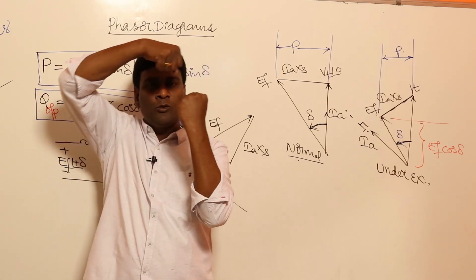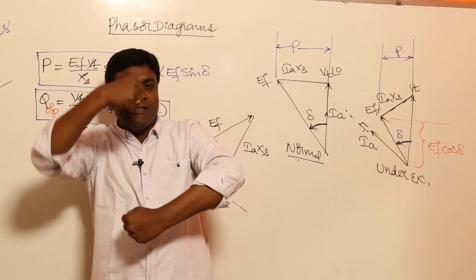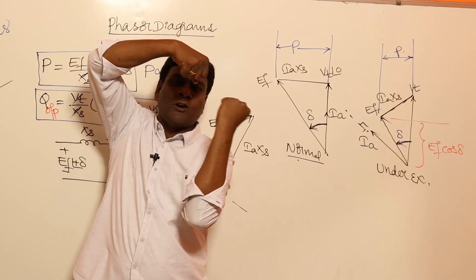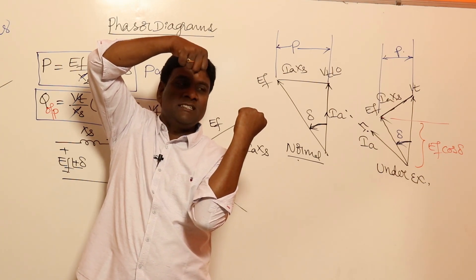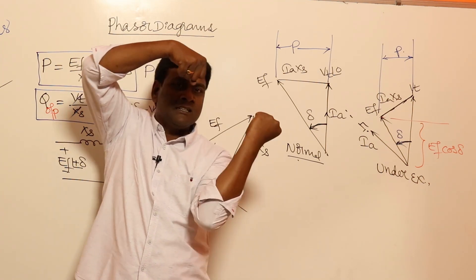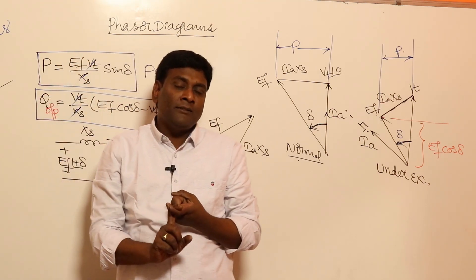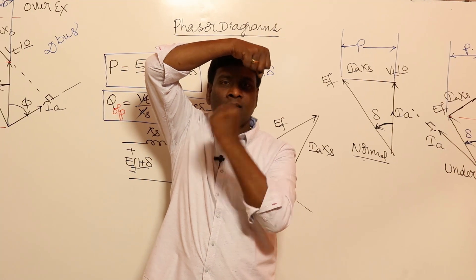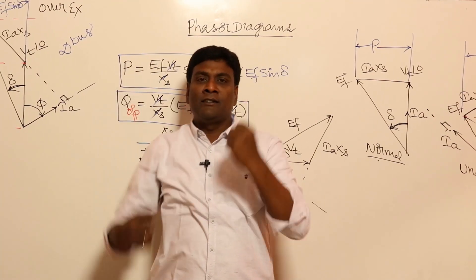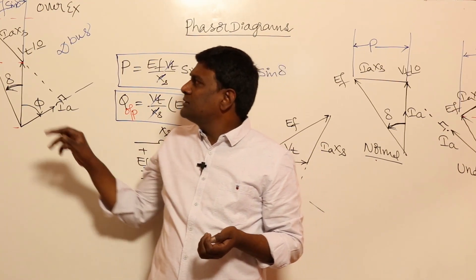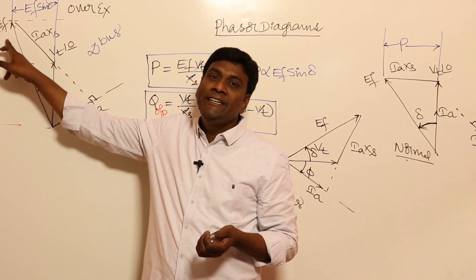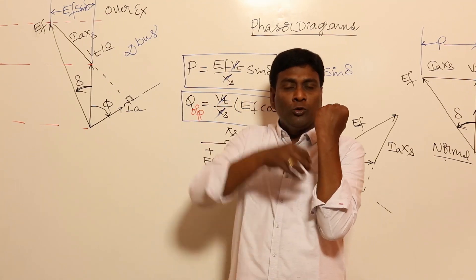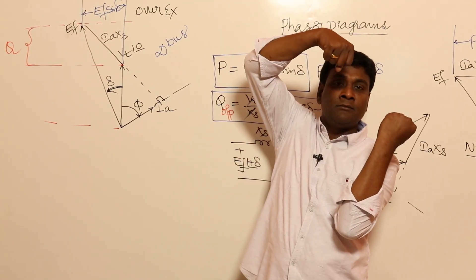If the field pole has fallen behind the resultant, the attraction between S-pole and N-pole creates torque in the direction of rotation — that is motor action. So: field pole leading resultant = generator; field pole lagging behind resultant = motor. Similarly, Ef leads Vt in a generator, and Ef lags Vt in a motor. The field MMF gives you Ef, so Ef should lead Vt for a generator and lag Vt for a motor.